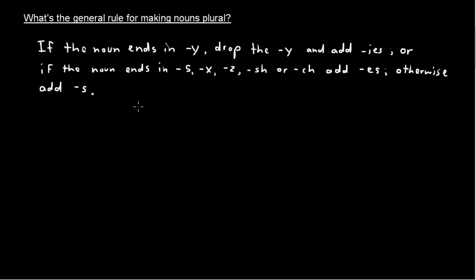So let's take the two sort of exceptions first. If it ends in y, you drop the y and add i-e-s. We'll do some examples. Or if the noun ends in s, x, z - although I'm still looking for a regular noun that ends in z - s-h, or c-h, we've got plenty of those. Then you add e-s. Otherwise, in all other cases, add an s.